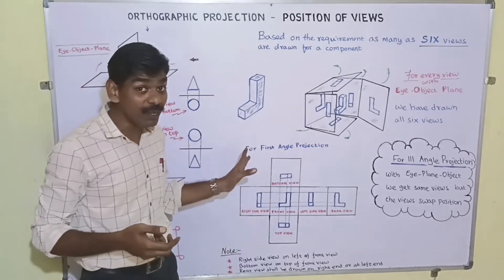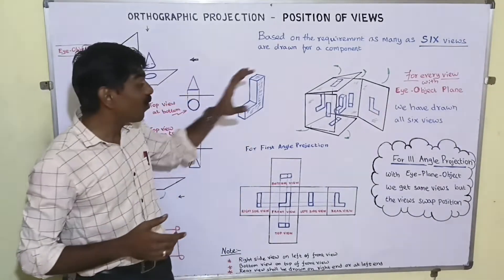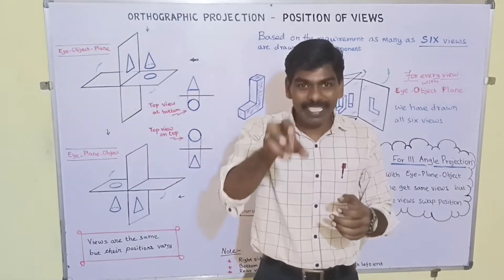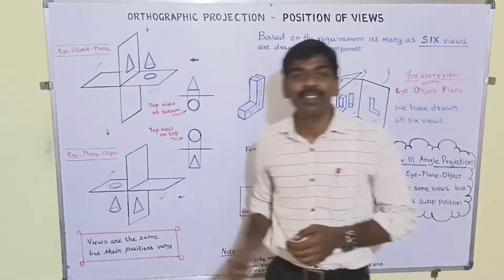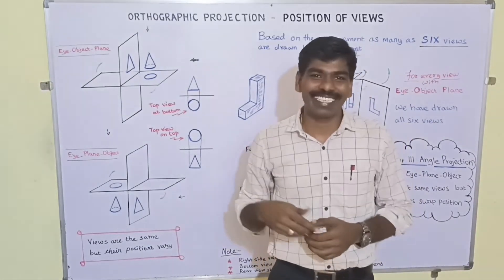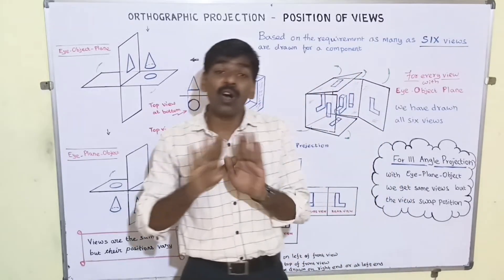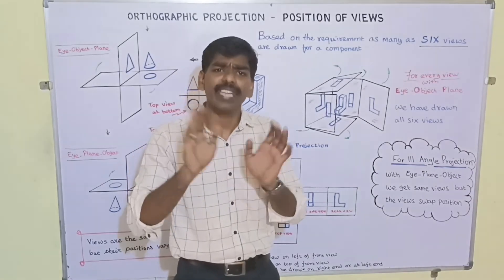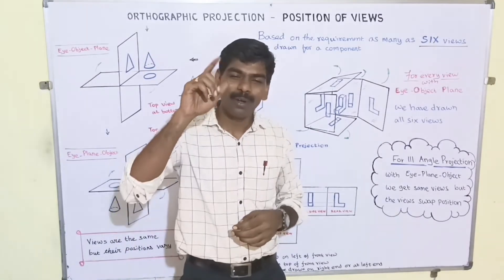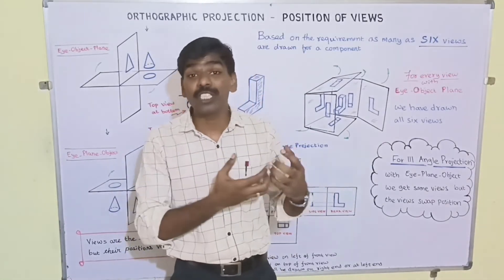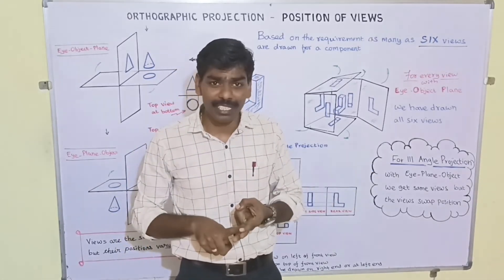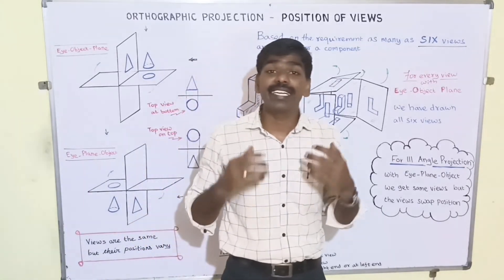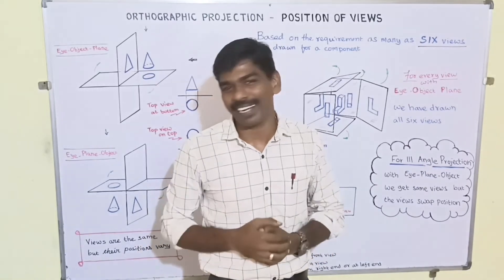For third angle projection this is a bit different. Using the same transparent cube, the technique follows eye-plane-object instead. Even though the views themselves are the same, the positions swap: the right side view is drawn on the right, the left side view on the left, and the top view is drawn at the top. This is how the positioning of views varies between first angle and third angle projection. Positioning is very important because it tells us how the object is oriented, so whichever technique we follow, we need to understand and practice this.